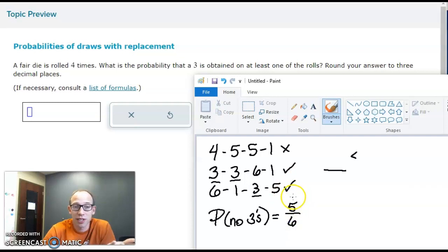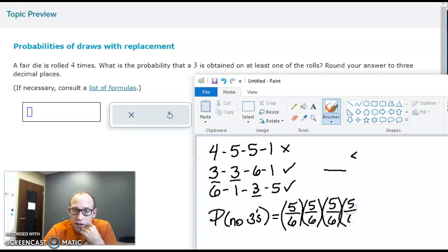Any of the numbers except three, and then you don't get a three on the second one, don't get a three on the third one, and don't get a three on the fourth one.